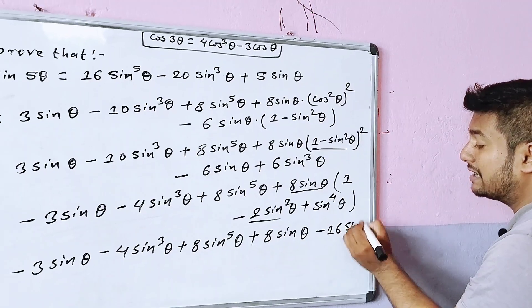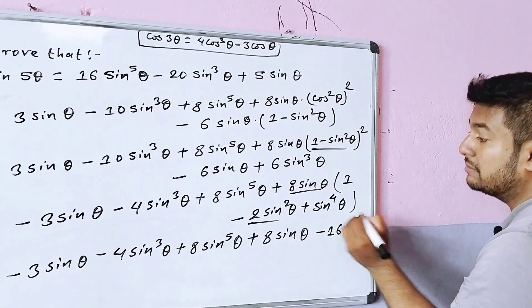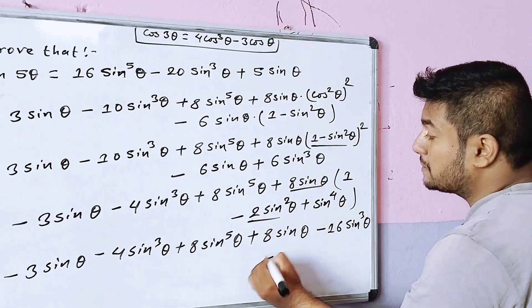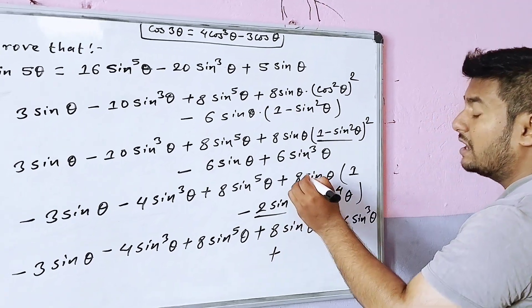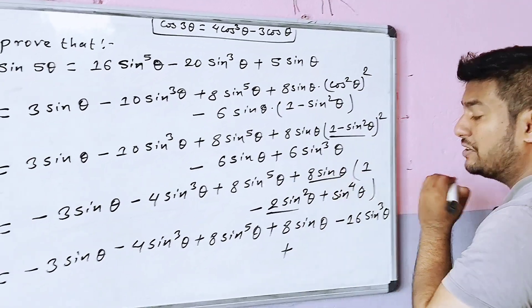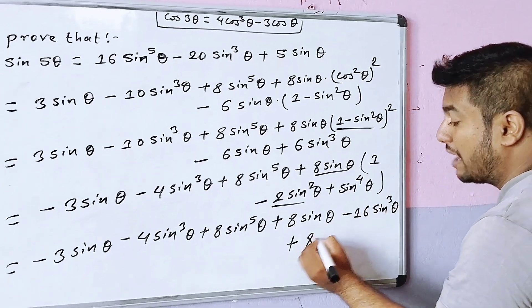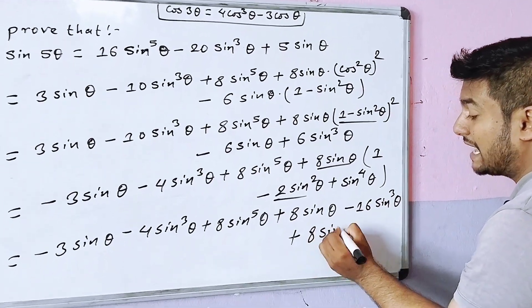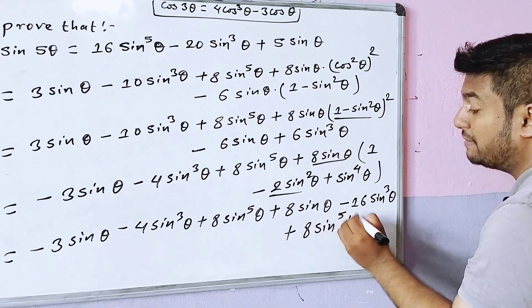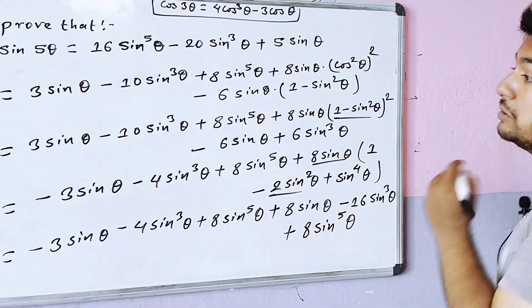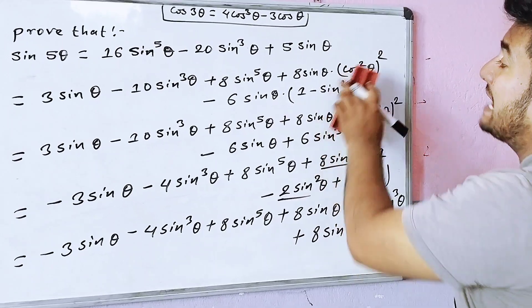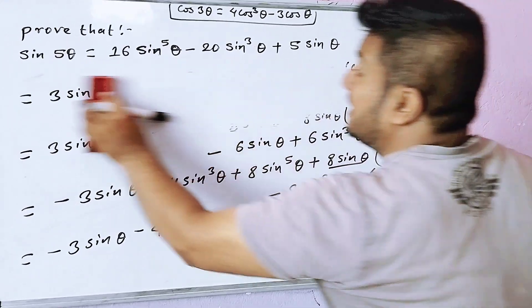Continuing the expansion: plus 16sin⁵θ, into sin²θ giving sin³θ terms, plus sin⁴θ terms, leading to sin to the power 5θ. This completes the proof, showing sin 5θ equals 16sin⁵θ minus 20sin³θ plus 5sinθ.